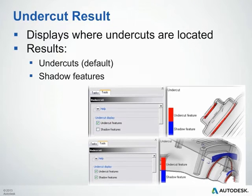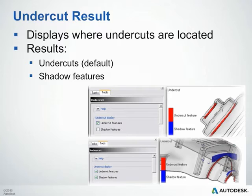The undercut result is the third and final result for the design advisor analysis. This displays undercuts and what we call shadow features on your part. When a feature casts a shadow on another feature of the mold, the feature causing the shadow is called an undercut. The algorithm assumes the XY plane is the parting plane and the positive Z direction points towards the nozzle of your machine. The shadow feature is located at a higher Z value than the undercut feature. Sometimes if the undercut feature is narrow and the material is very flexible, it is possible to eject the part without special tooling components, as in the case of some snap fits. However, when possible, undercuts should be avoided in order to keep the tool design simpler. The less complex the tool is, the less expensive it will be to run and to maintain.